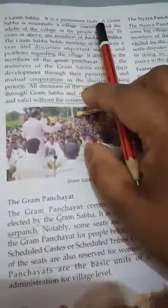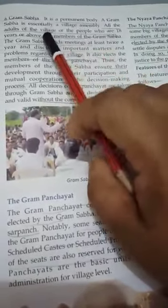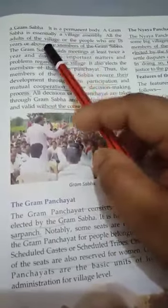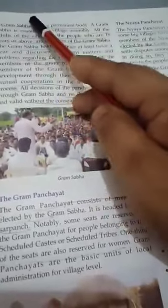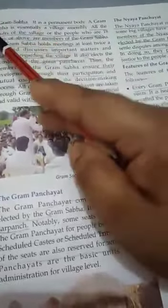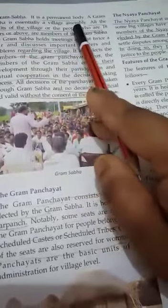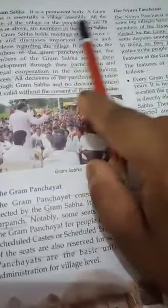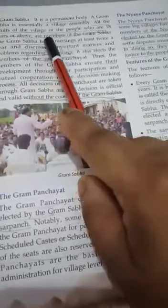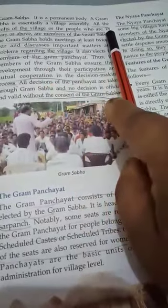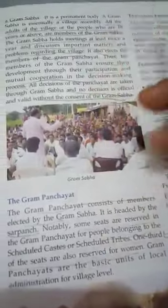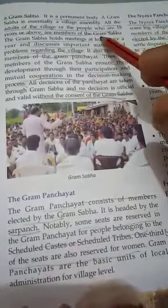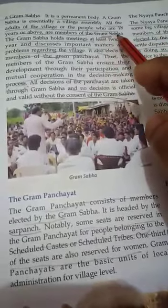It is a permanent body. A Gram Sabha is essentially a village assembly — 'Gram' means village and 'Sabha' means assembly. All the adults of the village, that is people who are 18 years or above, are members of the Gram Sabha.